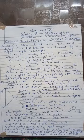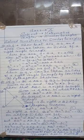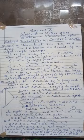Now, q² + r² equals (a-b)² + (2√(ab))². So (a-b)² is a² + b² - 2ab, and (2√(ab))² is 4ab. After simplifying, q² + r² equals a² + b² + 2ab.